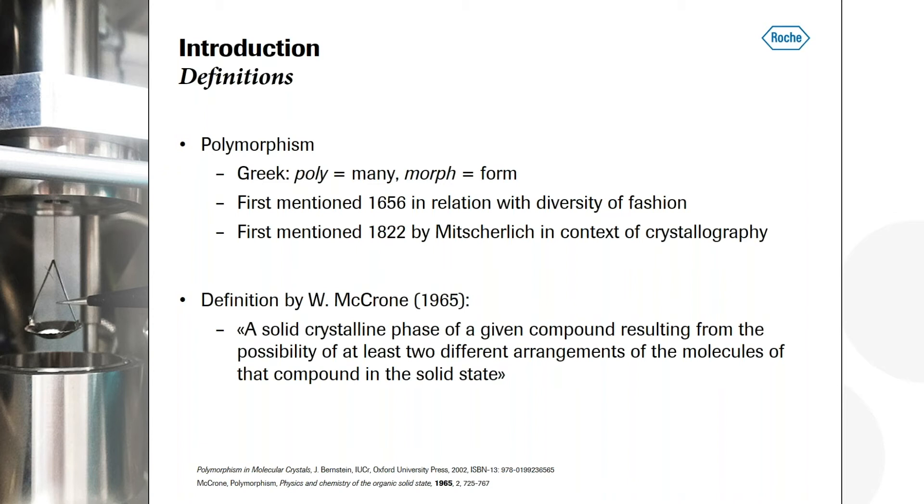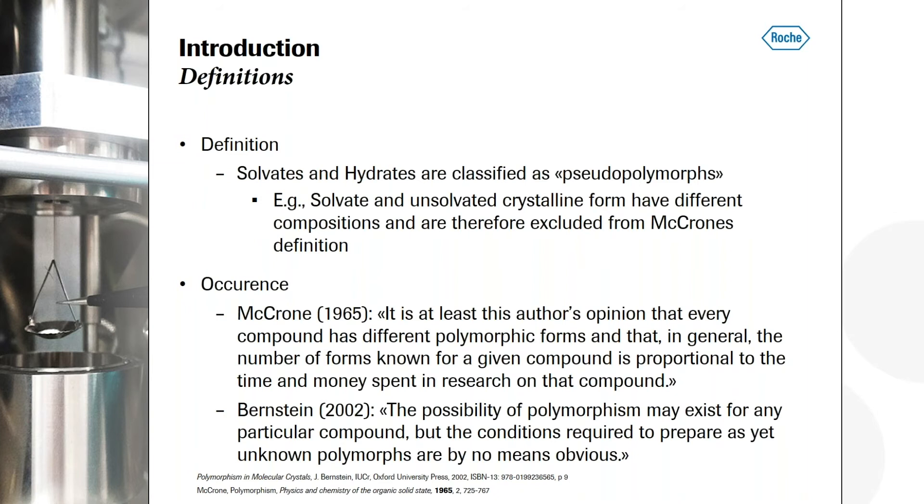And when we talk about polymorphs, we need to differentiate between these polymorphs, as we have seen before, and other solid forms. Therefore, I call the picture before solid form landscape. Because if we have the definition from Walter McCrone, it says a solid of a given compound. And if we talk about solvates or hydrates, I mean, this is not within the definition of Walter McCrone. Because then we have a different composition, if you compare it to an anhydrous form. Sometimes it's called pseudopolymorphs. I just use the wording solvates or hydrates. But we prefer to use the wording solid form if we talk about different crystalline forms and amorphous. So this includes really the whole variety of possibilities.